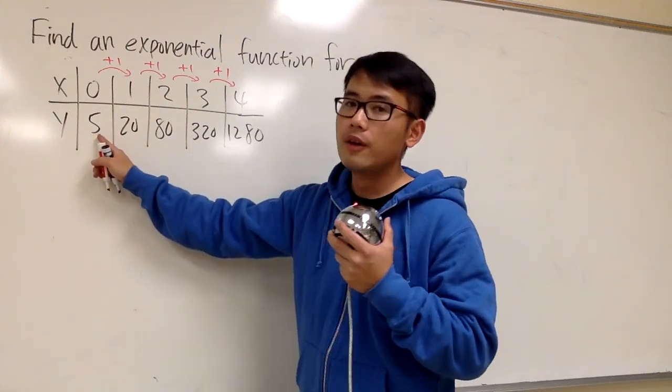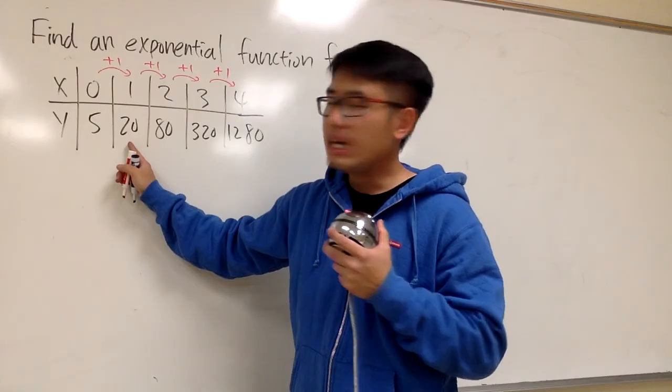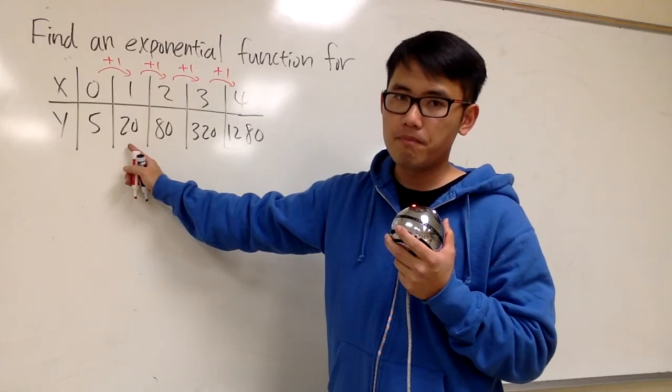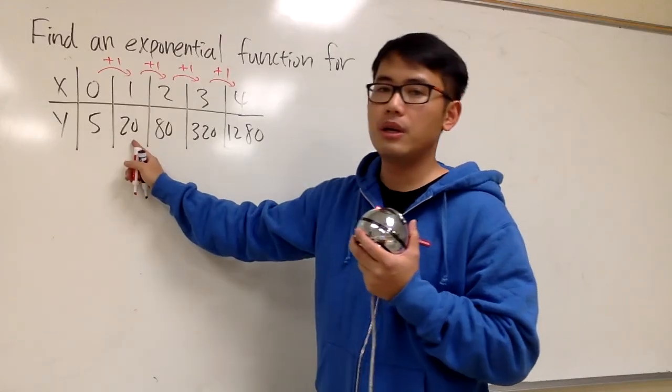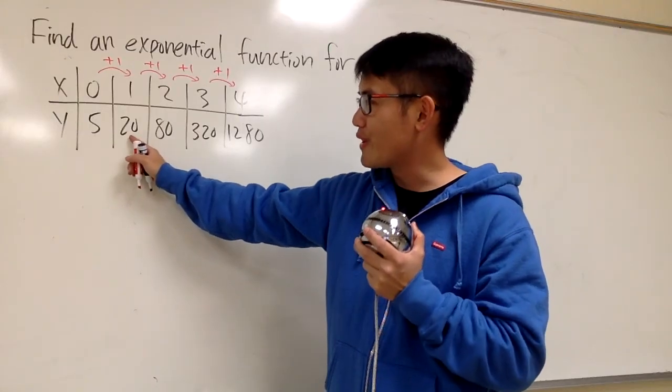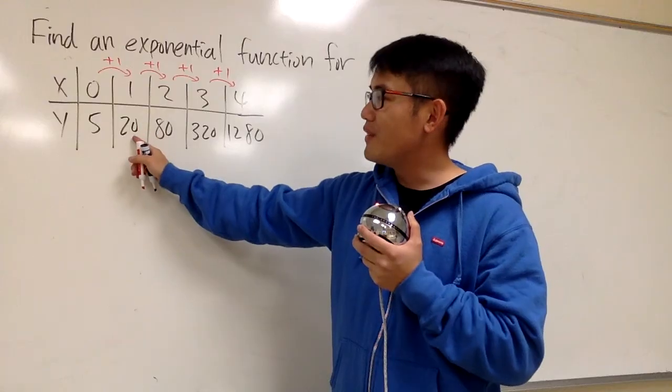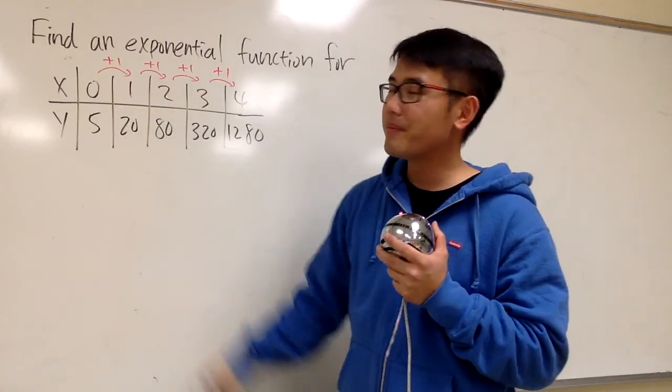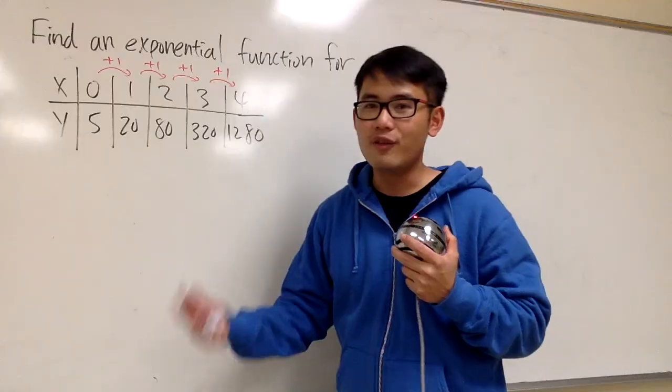Look at this one, from 5 to 20. If you look at this as going up by 15, well that's okay from here to here. However, it doesn't work anymore from here to here. If you add 15 to 20, you get 35, you don't get 80, right? So you have to look at this from a different way.